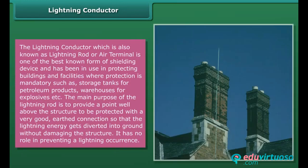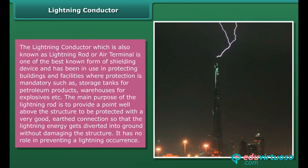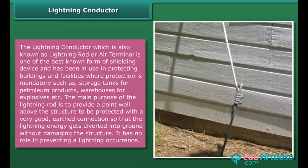The lightning conductor, also known as a lightning rod or air terminal, is one of the best-known forms of shielding device and has been in use to protect buildings and facilities where protection is mandatory, such as storage tanks for petroleum products and warehouses for explosives. The main purpose of the lightning rod is to provide a point well above the structure to be protected with a very good earth connection, so that the lightning energy gets diverted into the ground without damaging the structure. It has no role in preventing a lightning occurrence.